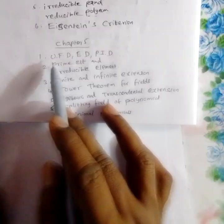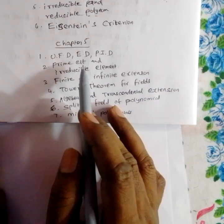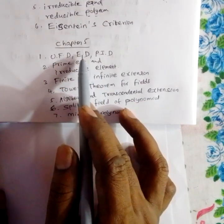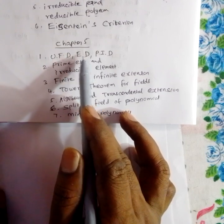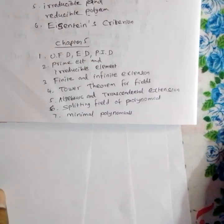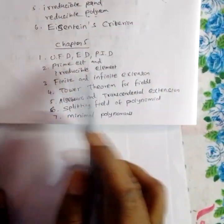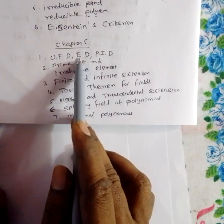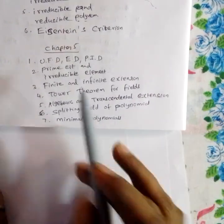Special domains include the unique factorization domain, Euclidean domain, and PID — principal ideal domain. Every Euclidean domain is a principal ideal domain. We will also study prime elements and irreducible elements in UFDs.